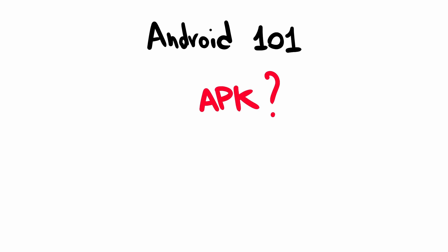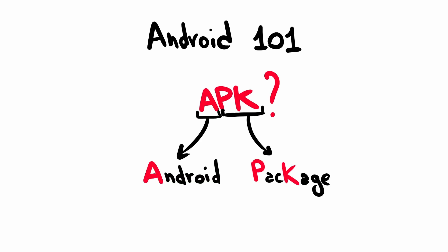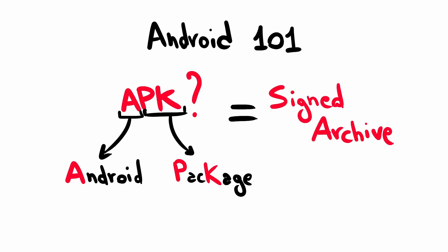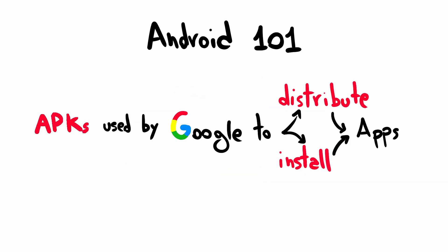Let's start from the basics. What is an APK? APK stands for Android Package and is nothing more than a signed archive file. This is the format that Google has decided to use to distribute and allow the installation of applications on Android.